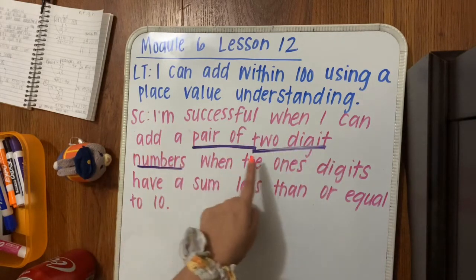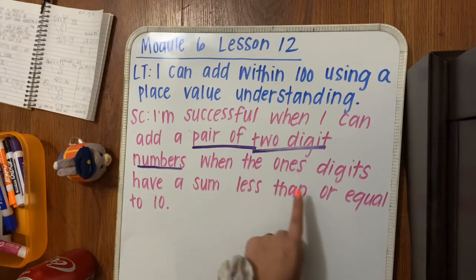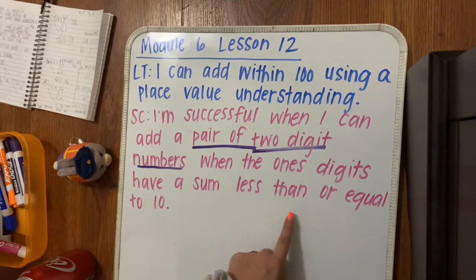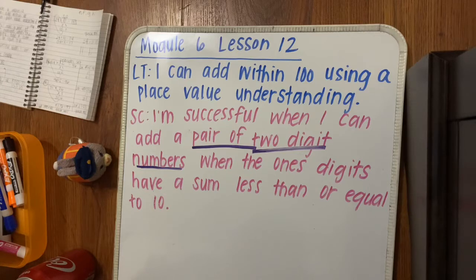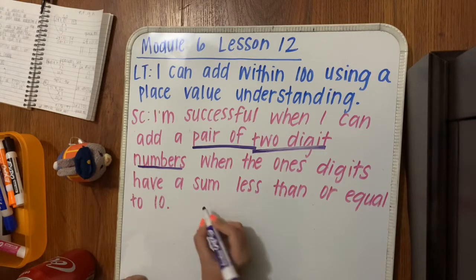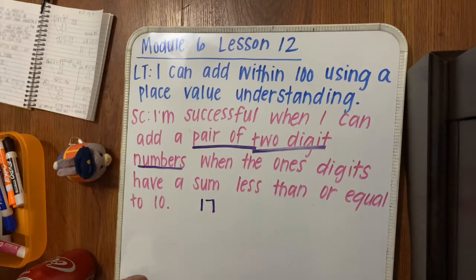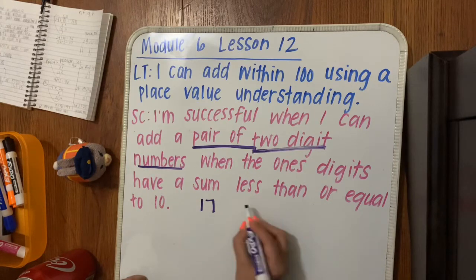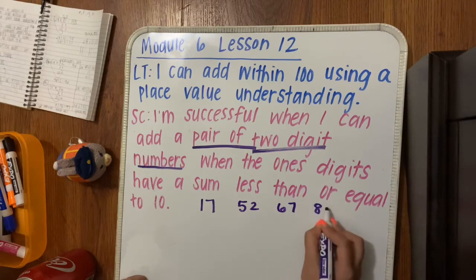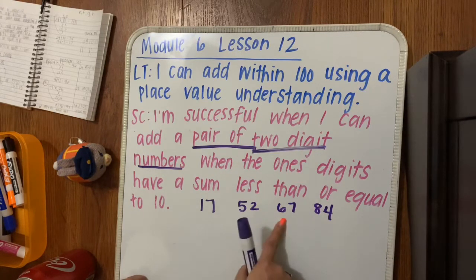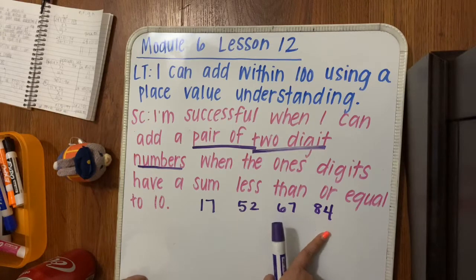Our success criteria for today is: I'm successful when I can add a pair of two-digit numbers when the ones digit has a sum less than or equal to 10. That's just a fancy way of saying we're going to be adding two numbers together that are two digits. For example, 17, 52, 67, and 84 are all two-digit numbers because there are two digits.